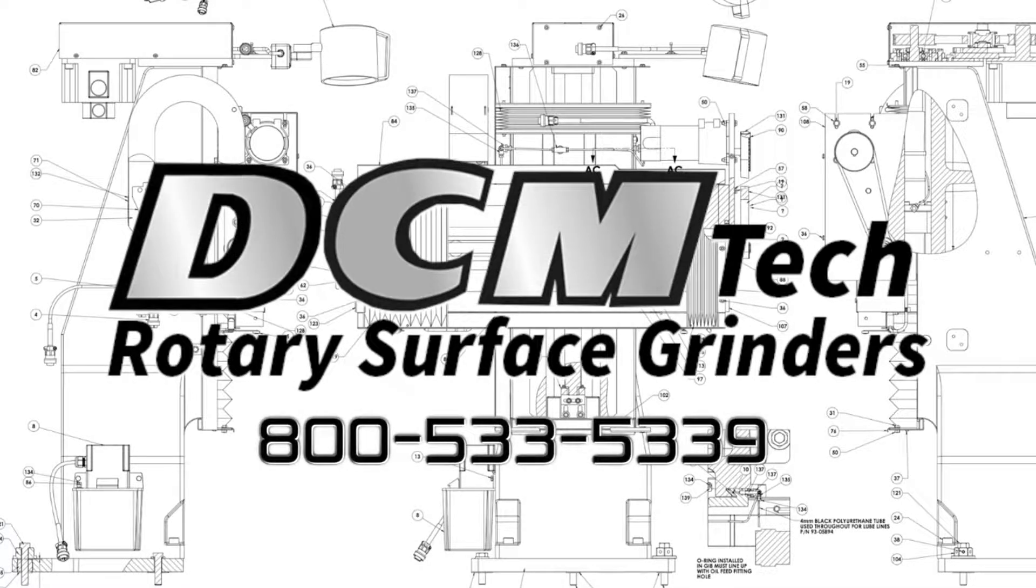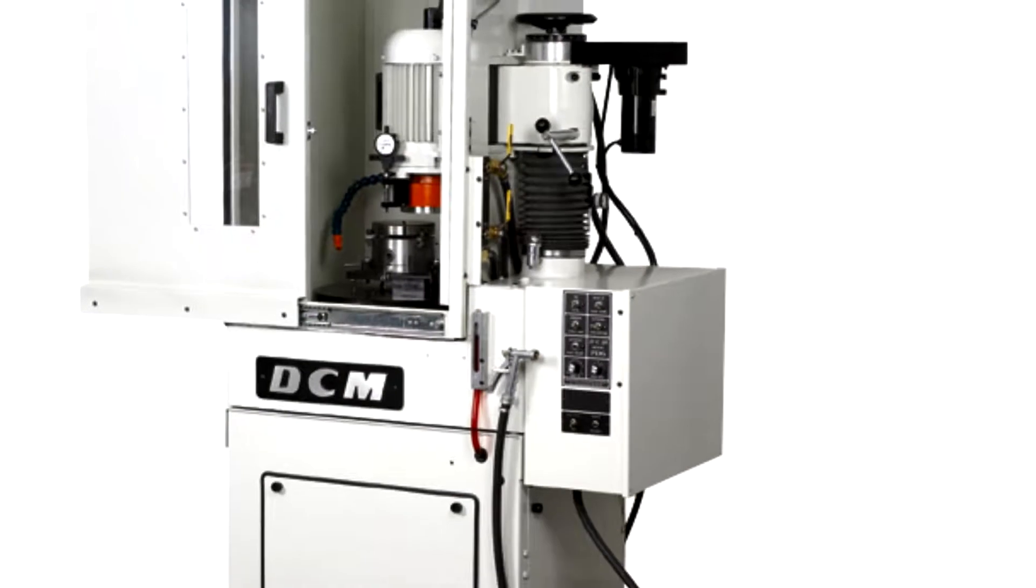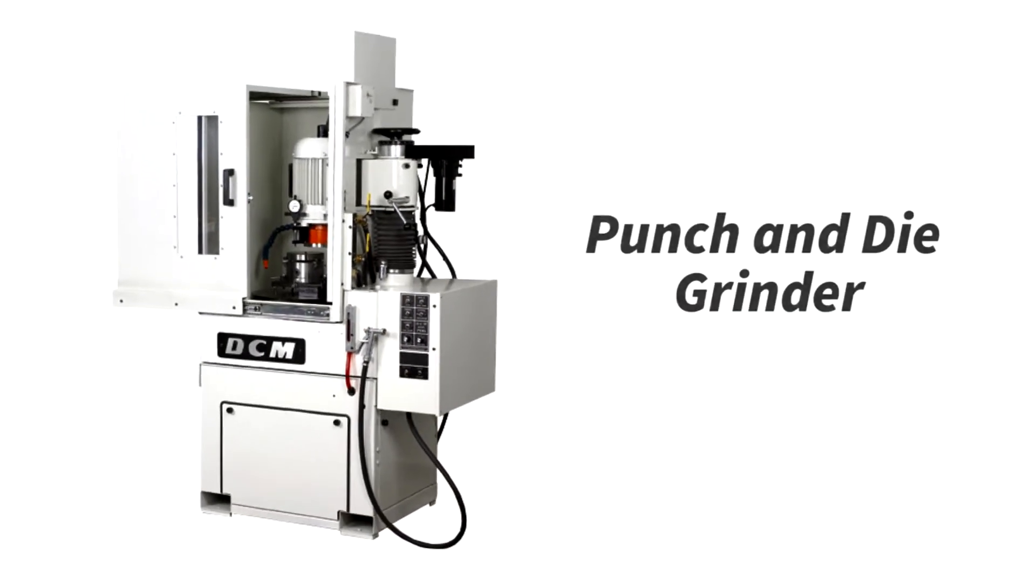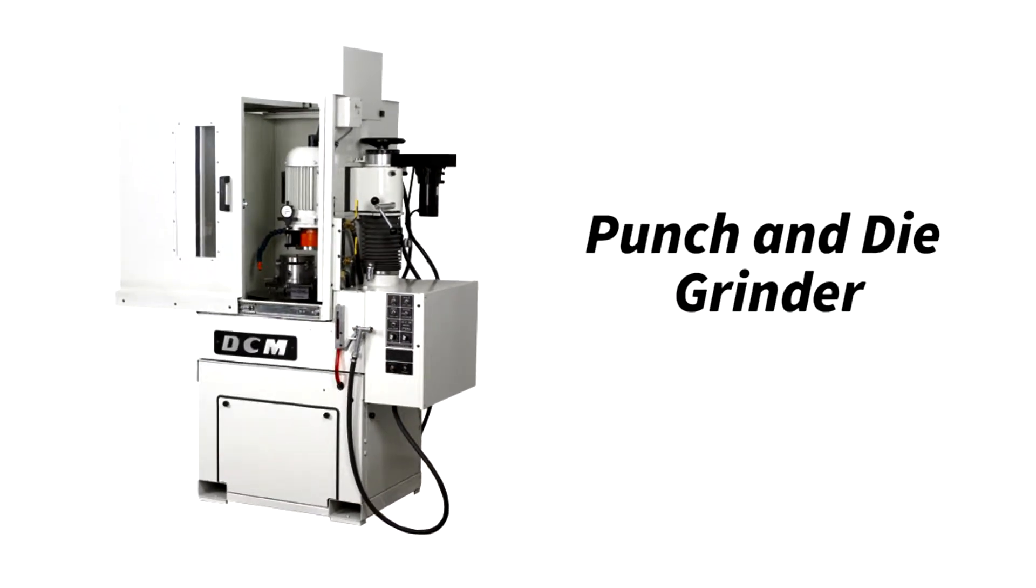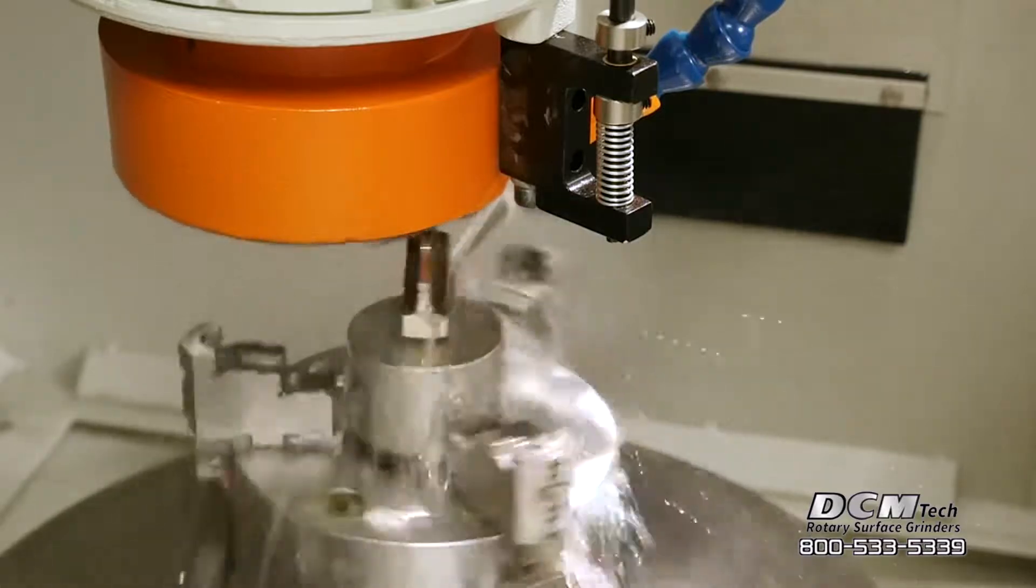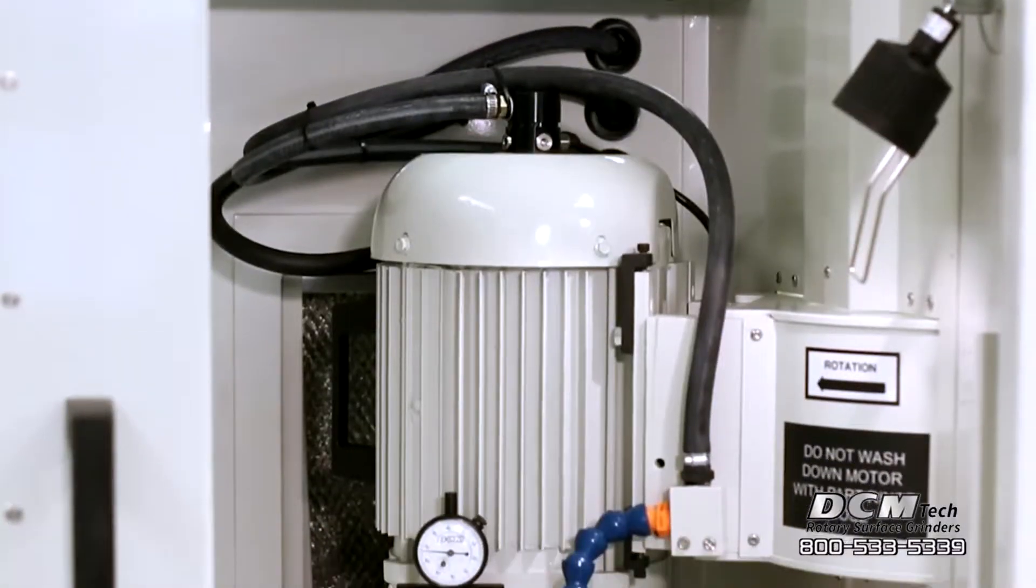DCM's Punch and Die Grinder is a part of our Rotary Table Vertical Spindle Surface Grinder family. It is primarily dedicated to the sharpening of turret press tooling and can accommodate the sharpening of rooftop punches and small progressive dies.